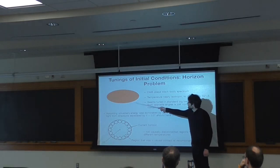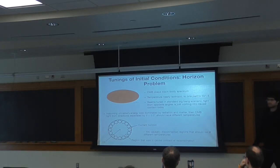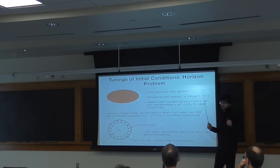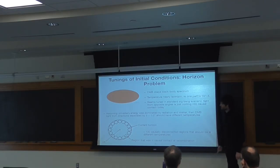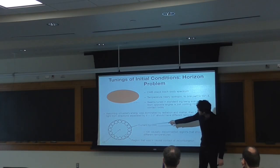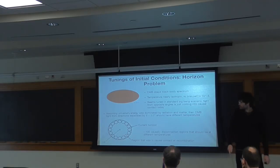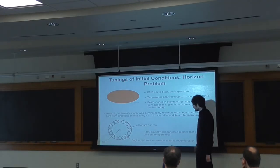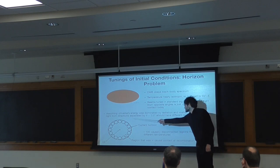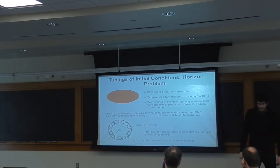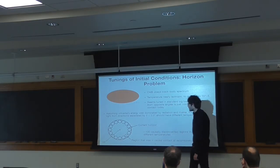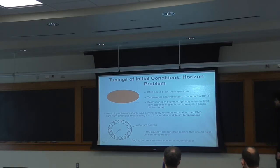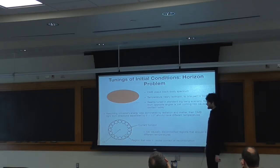This seems a little bit puzzling, because when you look at opposite directions of the sky, light from those directions is just coming into causal contact today. What's strange is the light from those directions seems to be at the same temperature. In this cartoon here, these bubbles are supposed to represent the causal horizons at the time of recombination when the CMB forms. If you do the calculation right, there should be about a hundred such different horizons. If these horizons were really not in causal contact with each other, it seems strange that light coming from them to us today all has approximately the same temperature.